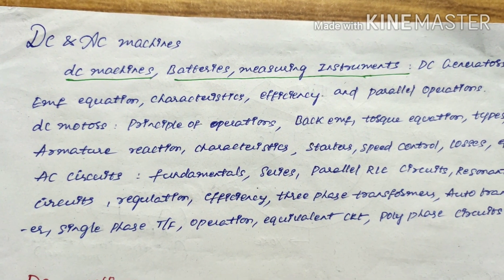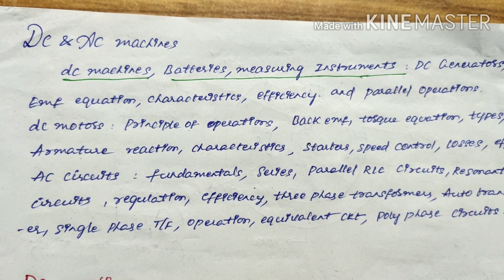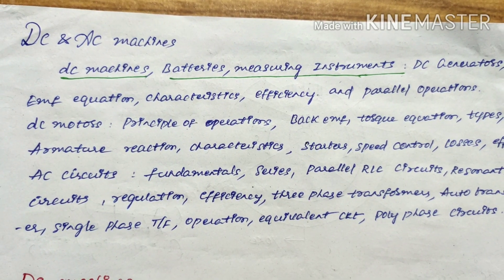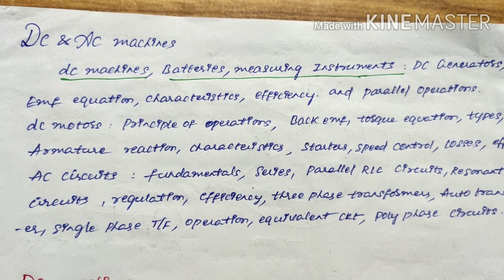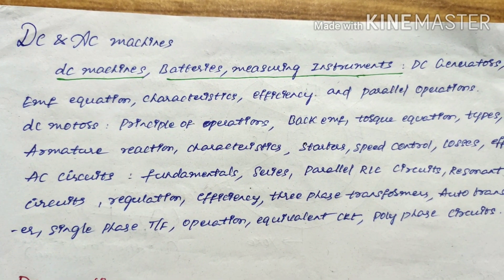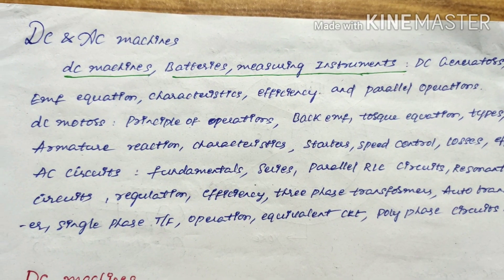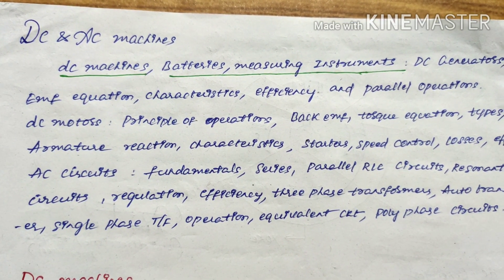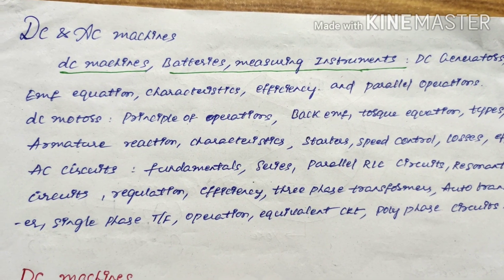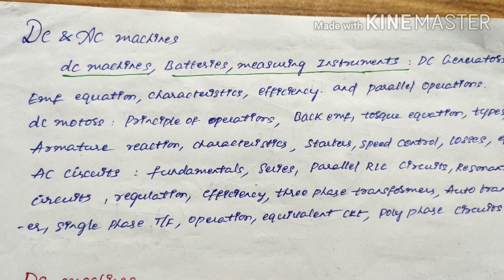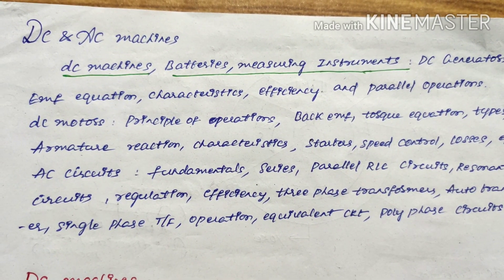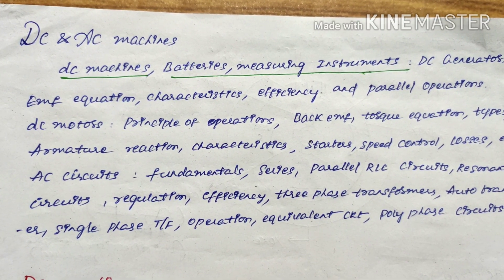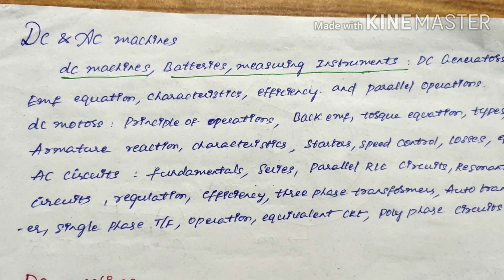DC stands for direct current, whereas AC stands for alternating current. For DC current, at any instant the current will not become zero, whereas for alternating current at some instant it will become zero. That's why we call it AC, and sinusoidal representation is accurate for AC.